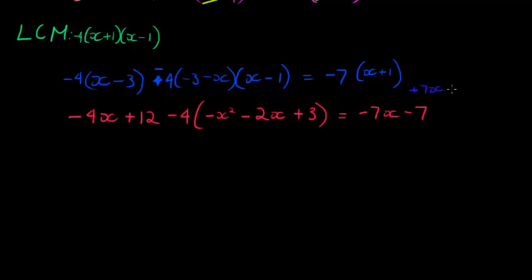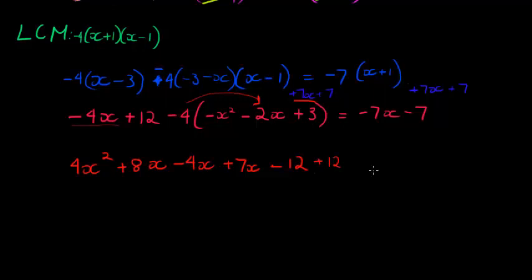As soon as I've done that I can continue. I've got the negative 4 times the -x² that gives me positive 4x². Then I've got the negative 4 times the -4x as well as +7x. Then I've got my -3 times -4 times 3 gives me -12, and other constants is positive 12 as well as positive 7.